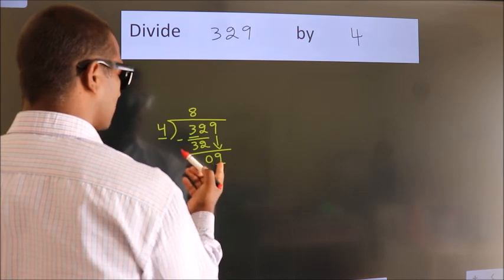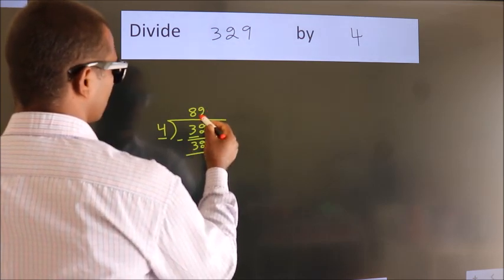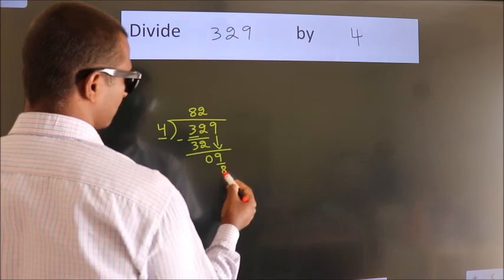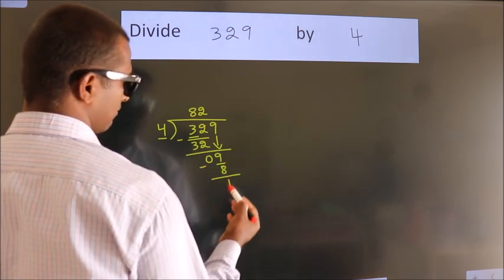So, 9. A number close to 9 in the 4 table is 4 twos, 8. Now, we subtract. We get 1.